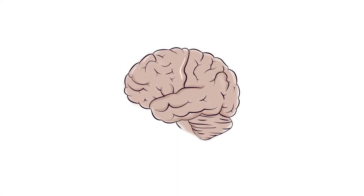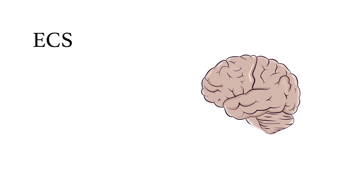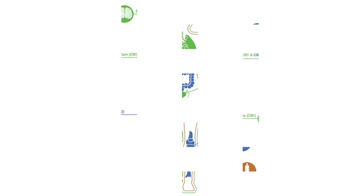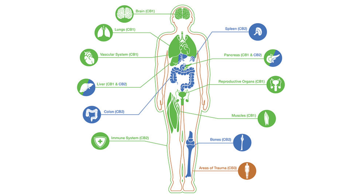Within the brain, the ECS is responsible for things like development, responding to injury, adaptation or plasticity, and balancing its chemical environment. Molecules from the cannabis plant act on the ECS — this is how the ECS got its name. Because the ECS is so widespread throughout the body and compounds from cannabis can interact with it, cannabis tends to affect many different diseases and conditions.